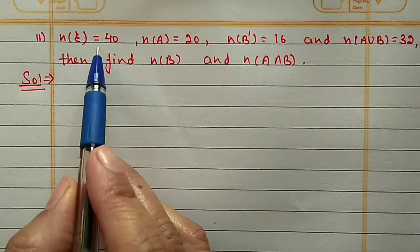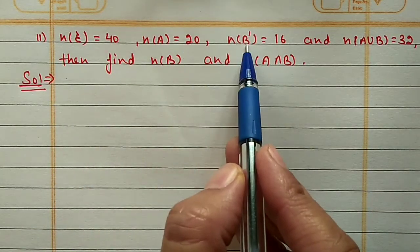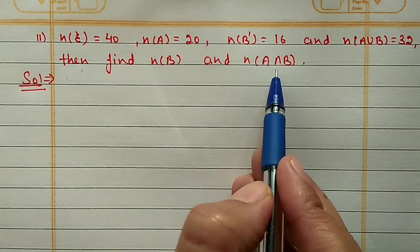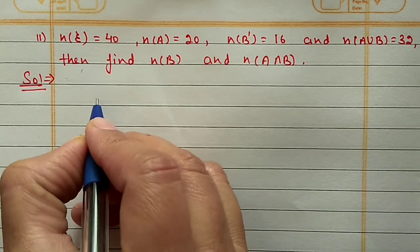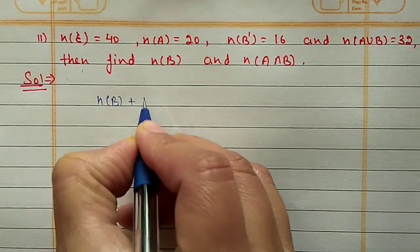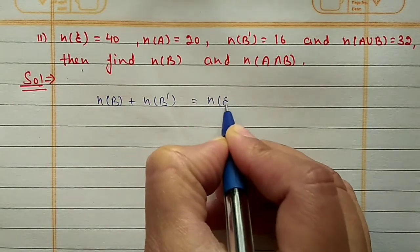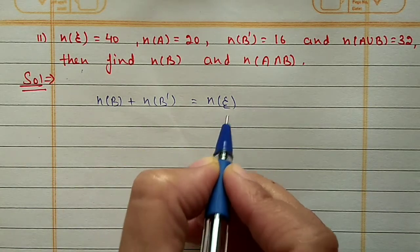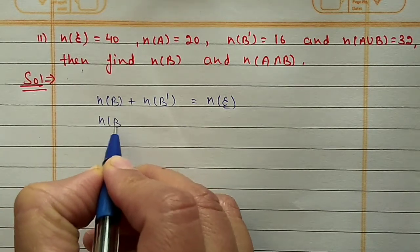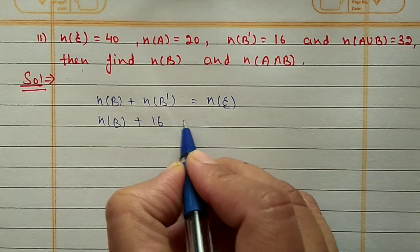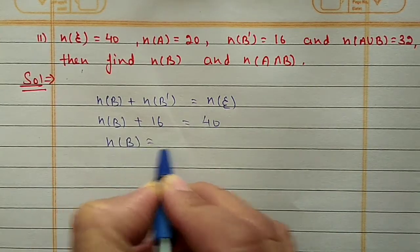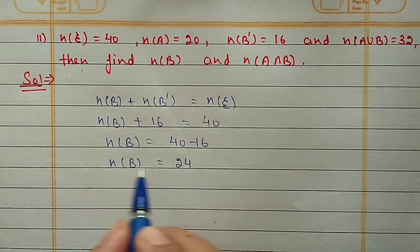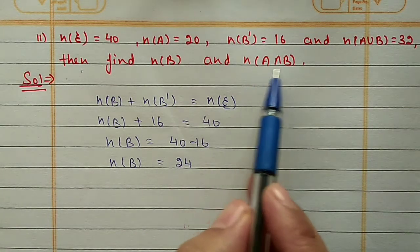Question 11: N(U) = 40, N(A) = 20, N(B') = 16, N(A∪B) = 32. Find N(B) and N(A∩B). First we use the fifth property: N(B) + N(B') = N(U). N(B') is 16 and N(U) is 40, so N(B) = 40 - 16 = 24. Total 24 elements are in B.